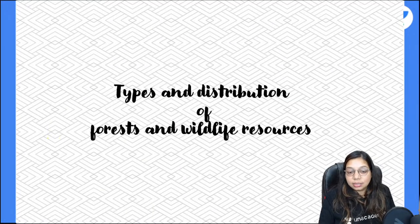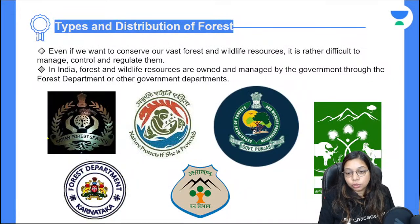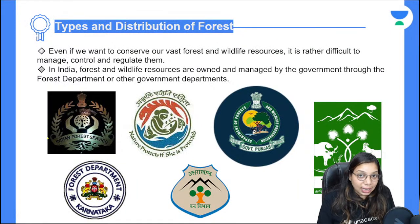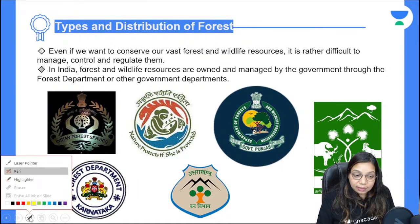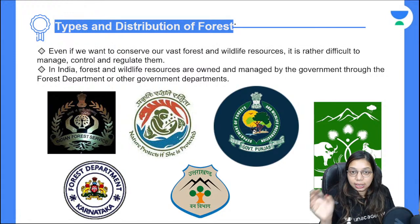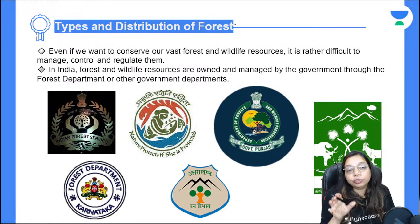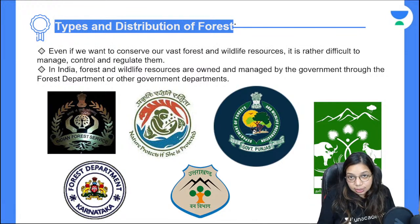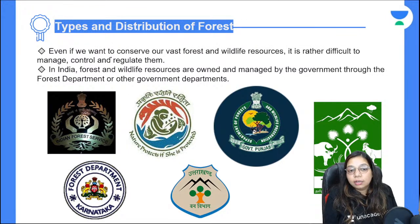Now, the types and distribution of forest and wildlife resources. In class 9 we classified forests as thorn forest, deciduous forest, evergreen forest, and rain forest. Now we classify forests for conservation purposes. Managing and regulating forests is very difficult — like managing a home with many members in a joint family is difficult.